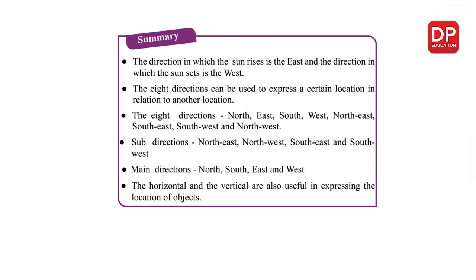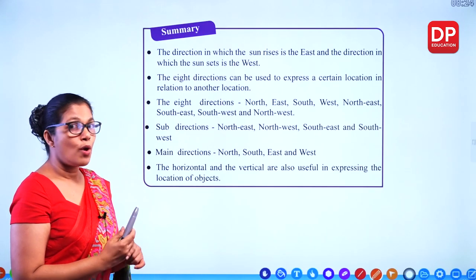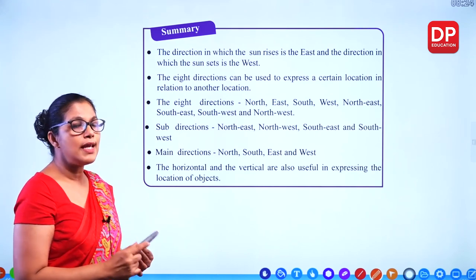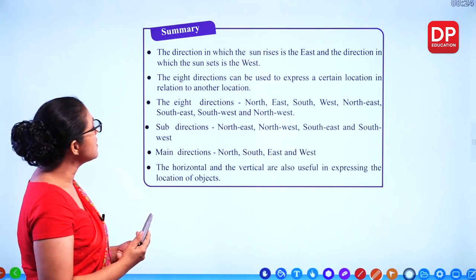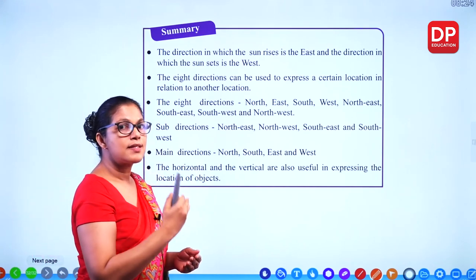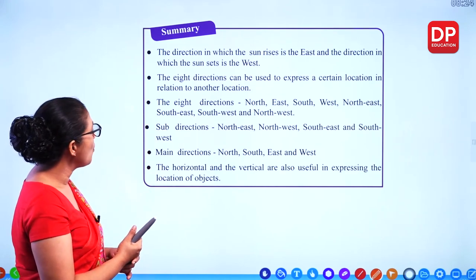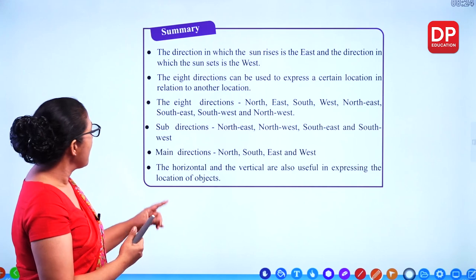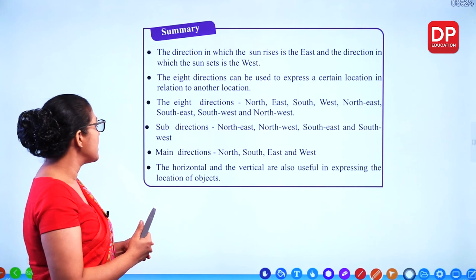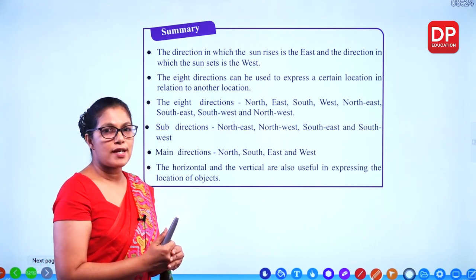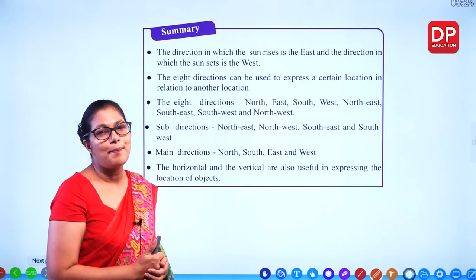So we have covered all theory related to directions. Remember the four main directions — north, south, east, west — and the four sub-directions — north east, south east, south west, and north west. Horizontal and vertical planes are also useful in expressing the location of objects, so you need to know what a horizontal plane and a vertical plane are.